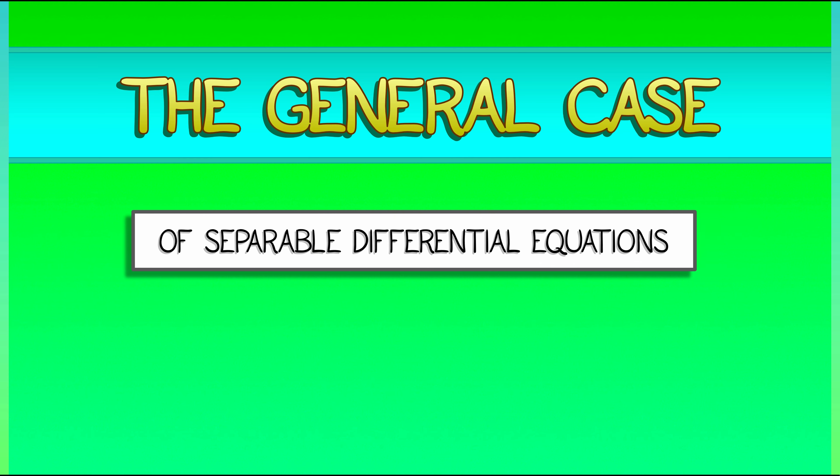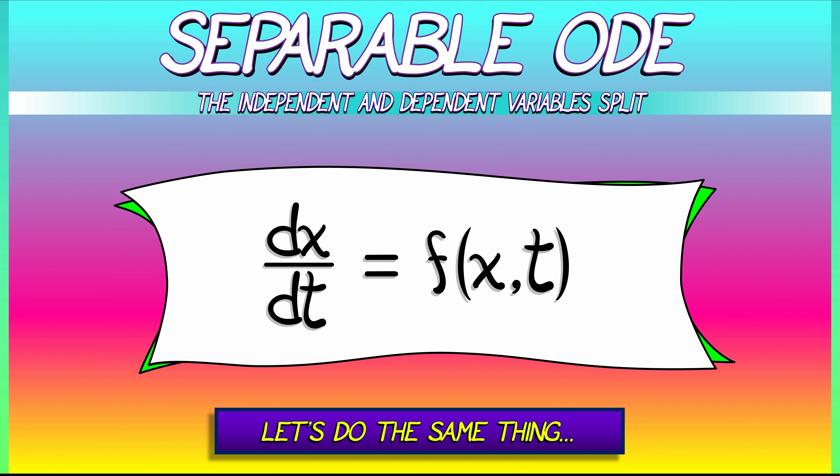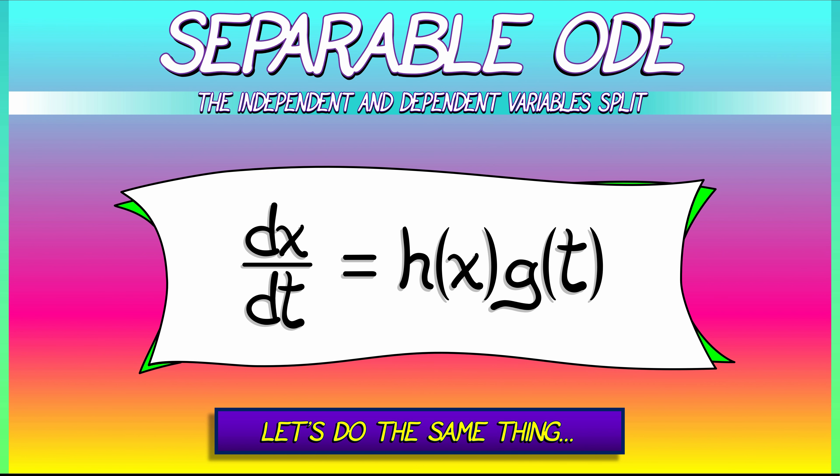of separable differential equations, that we can hope to solve using the techniques that we have learned thus far. A separable ODE, in its most general form, looks like dx/dt equals f of x comma t, where that right-hand side splits into a product of a function of x with a function of t. The variables are not mixed together. Let's call that function of x h, that function of t g, and that's it.